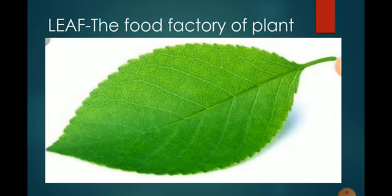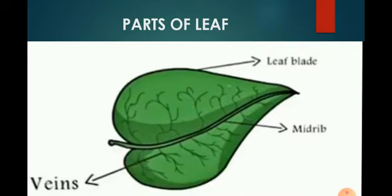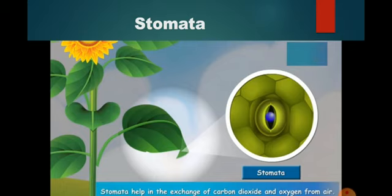Our next topic is the parts of the leaf. The green exposed portion is known as leaf blade. The central thick part of the leaf is known as midrib and the branches arising from the midrib are the veins. There are small openings on the undersurface of the leaves known as stomata which help in exchange of gases.